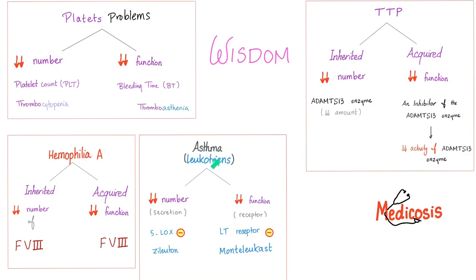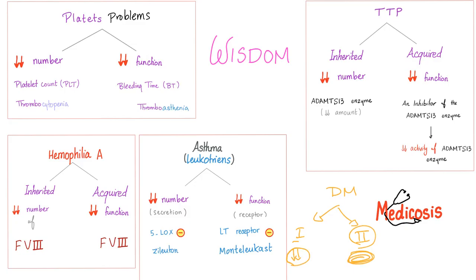How do we treat asthma? We try to decrease the number of leukotrienes or to decrease their function. To decrease the number, we inhibit their secretion by giving a 5-lipoxygenase inhibitor such as the famous zileuton. To decrease the function of leukotrienes even if they're secreted in normal amounts, we inhibit the leukotriene receptor by giving leukotriene receptor blockers such as montelukast. Remember diabetes: type 1 had decreased secretion of insulin; type 2 — the secretion is fine but insulin is inhibited at the receptor site — we call this insulin insensitivity. Medicine makes so much sense once you understand what you're talking about. You need to convert data into information, information into knowledge, and knowledge into wisdom. This is Medicosis — the Rolls Royce of medicine.